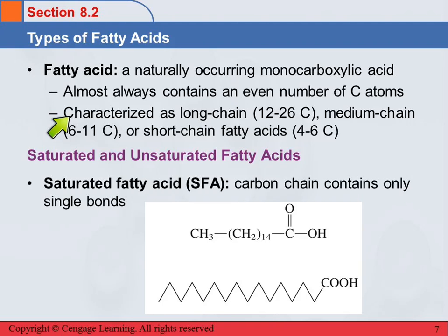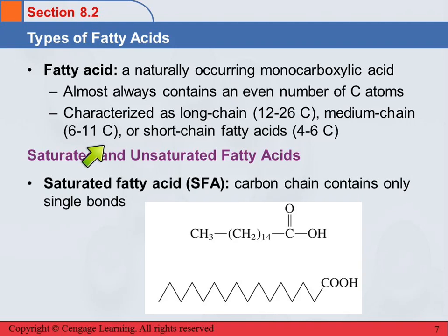Fatty acids have a long chain, usually 12 to 26 carbons. A medium chain fatty acid is 6 to 11 carbons, and a short chain fatty acid is 4 to 6 carbons. We just classify them that way. 26 carbons is a pretty long chain.